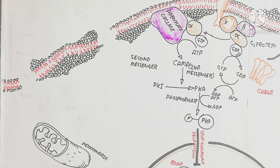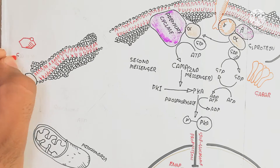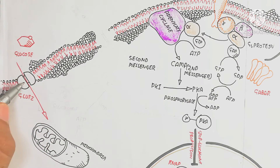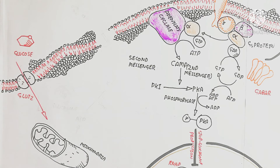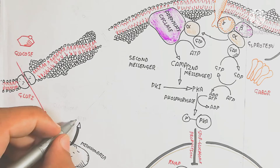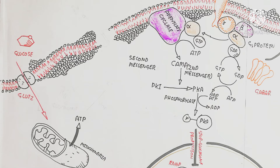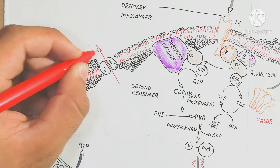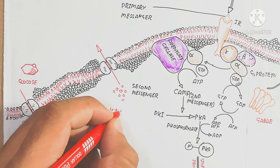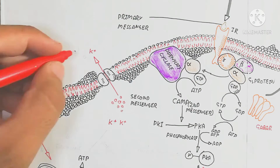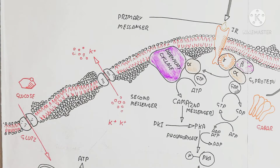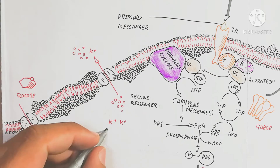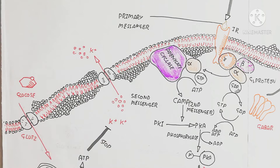Potassium ions move outside the cell. The mitochondria produce ATP, and this ATP stops further potassium ion efflux. Glucose is converted to produce ATP, which causes inhibition of potassium ion channels. As a result, calcium ions do not enter inside the alpha cell, leading to a negative charge inside. This means depolarization will occur but calcium ions will not move inward.